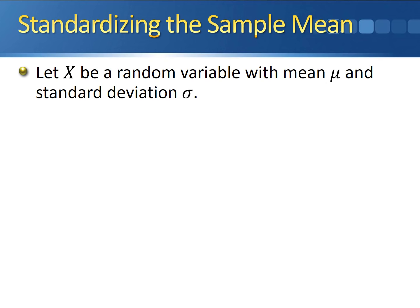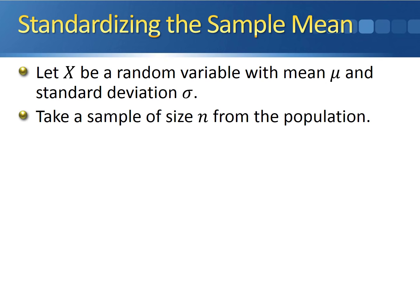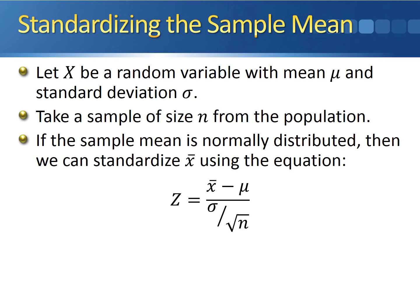In order to calculate probabilities for an observation from a normal distribution, we subtract off the population mean and divide by the population standard deviation to get a z-score. We can do a very similar thing with the sample mean. Let x be a random variable with mean mu and standard deviation sigma, and take a random sample of size n. Then, if the sample mean is normally distributed — either because the original population was normal or because of the central limit theorem — x-bar can be standardized by taking x-bar minus mu in the numerator and dividing by the standard error sigma over the square root of n. This value follows the standard normal distribution, so we can use the standard normal table to calculate any probabilities involving it.